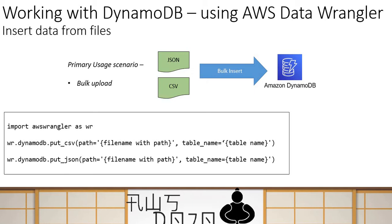The way the code works is: you import your AWS Wrangler module and then simply call wr.dynamodb.put_csv for a CSV file or put_json for a JSON file. You provide your file name and your table name, and it will do a bulk upload of the records from your files into the table. This is very useful when you are creating a DynamoDB table and trying to do a bulk insert — whether for migration or to create seed records.